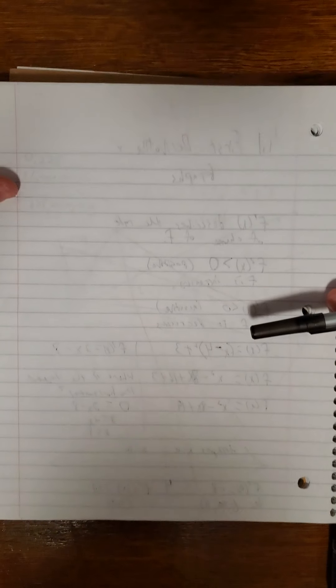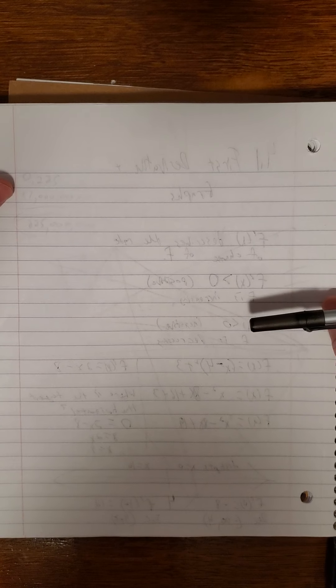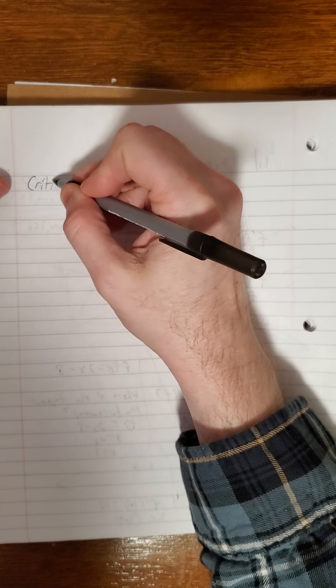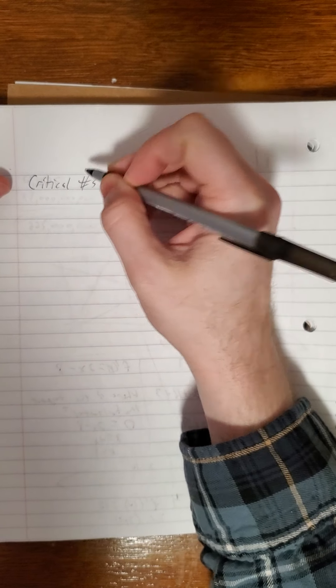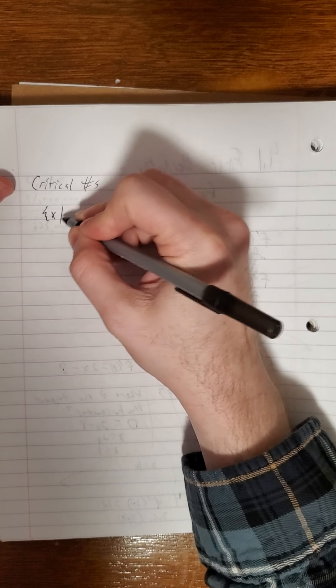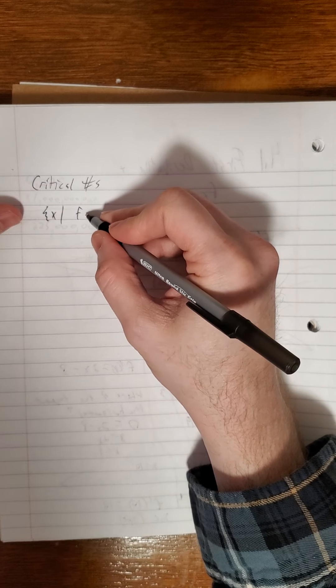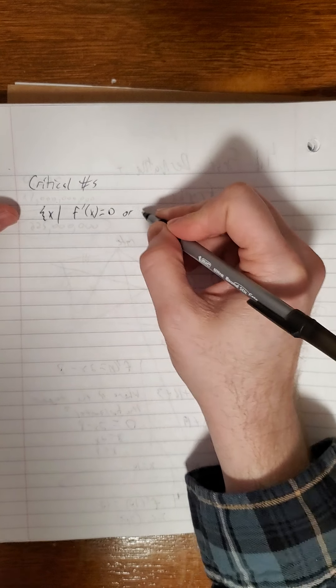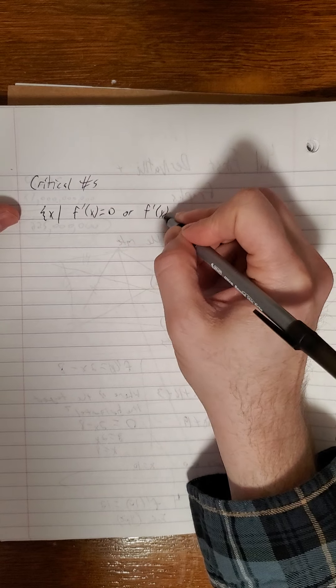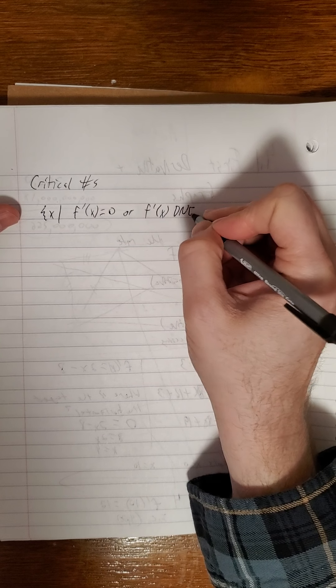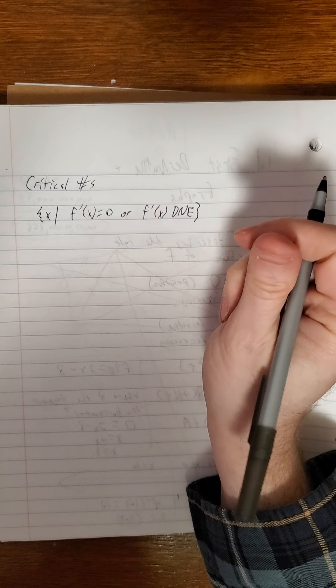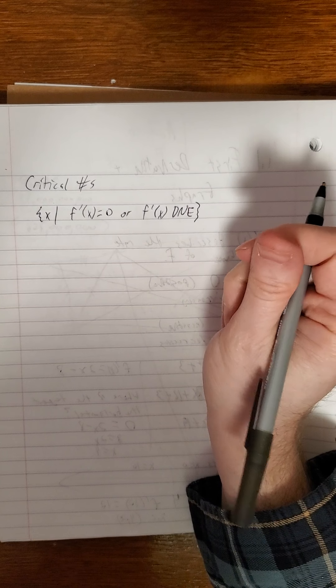So that 4 was an example of what we refer to as critical numbers. Critical numbers, set of all x such that either f prime of x is equal to 0 or f prime of x does not exist.